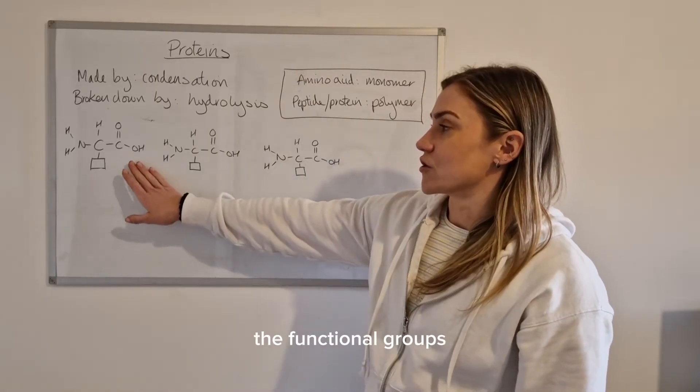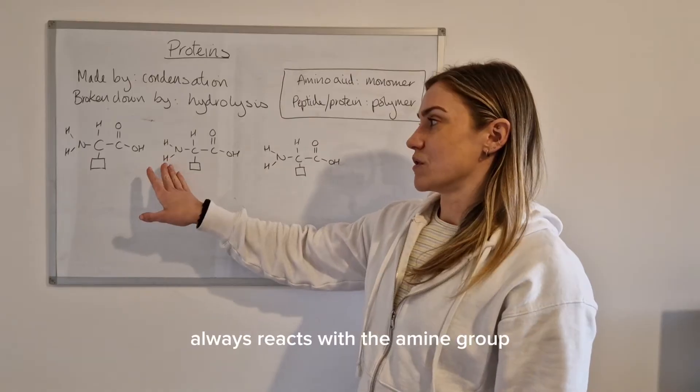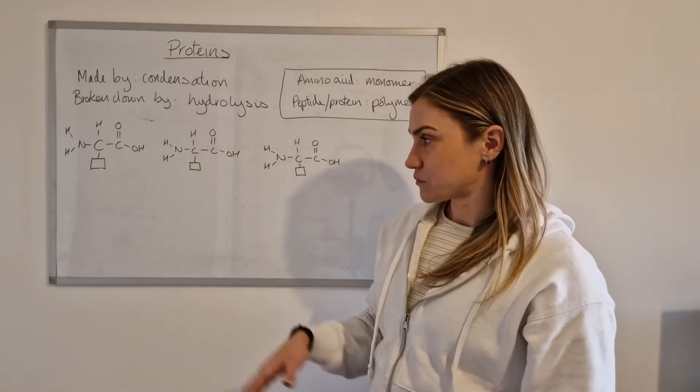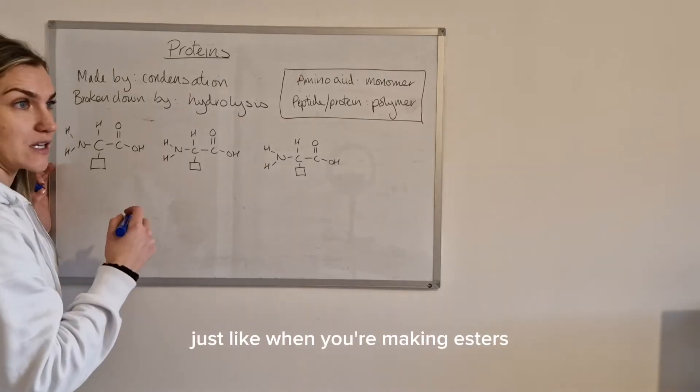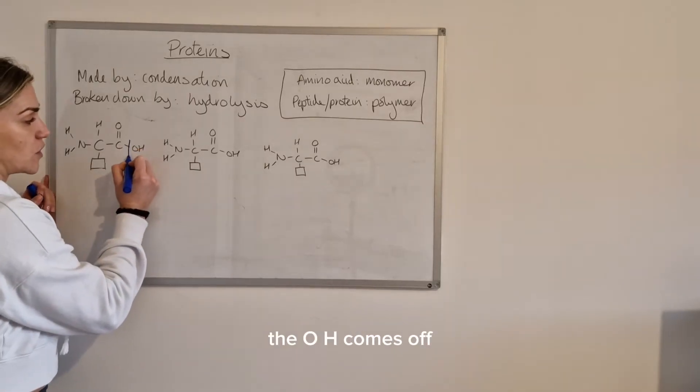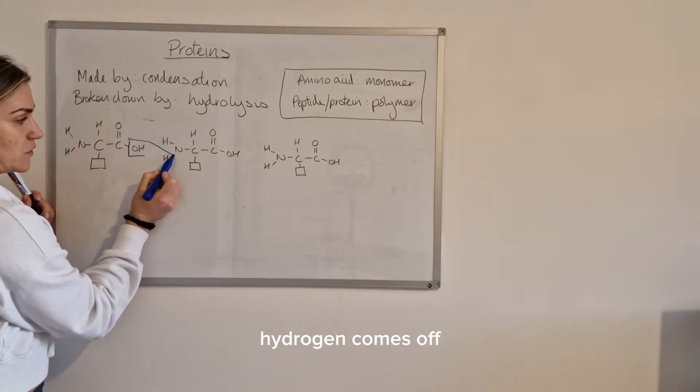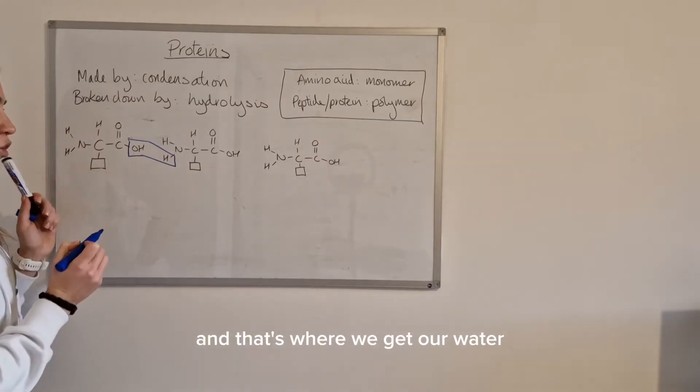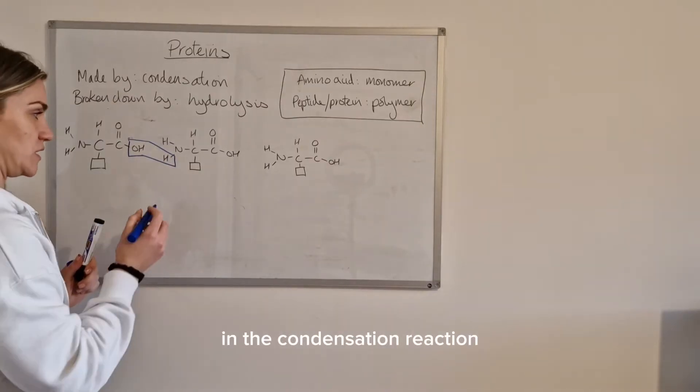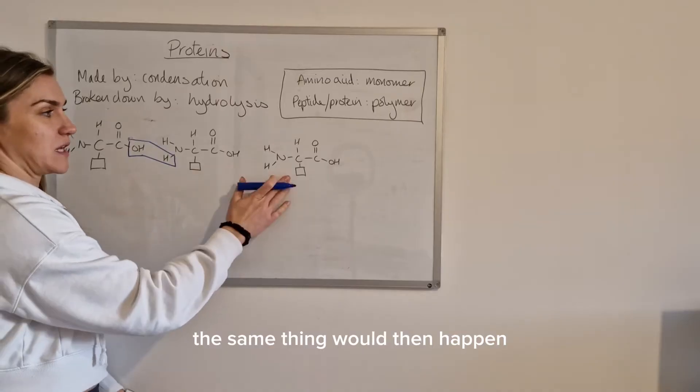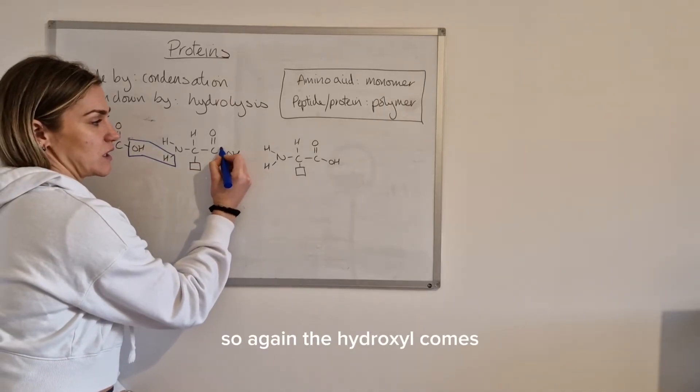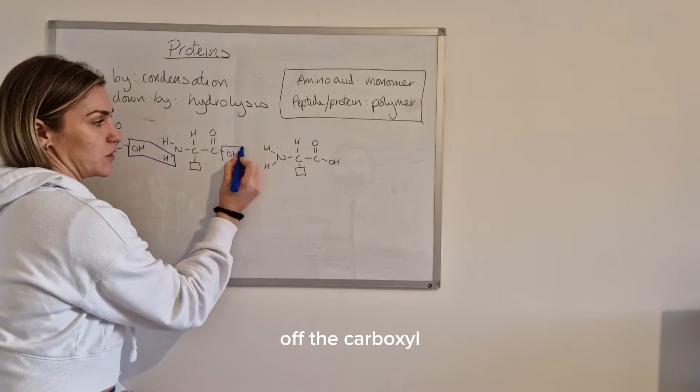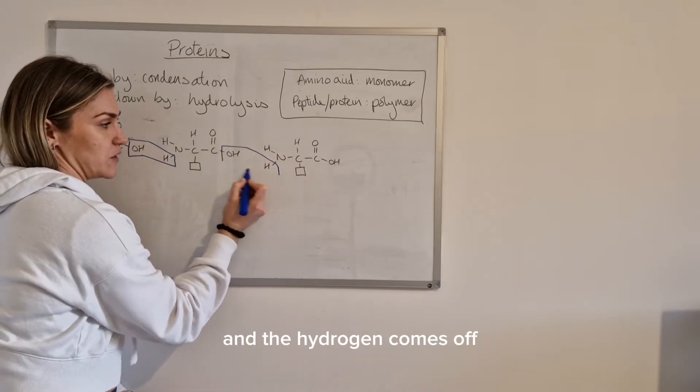So we've got the functional groups. Now the carboxyl group always reacts with the amine group so what happens is the OH just like when you're making esters, the OH comes off the carboxyl, hydrogen comes off the amine group and that's where we get our water being produced in the condensation reaction. The same thing would then happen between these two amino acids so again the hydroxyl comes off the carboxyl and the hydrogen comes off the amine.